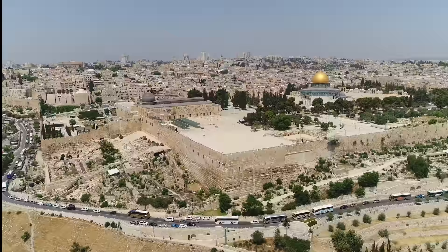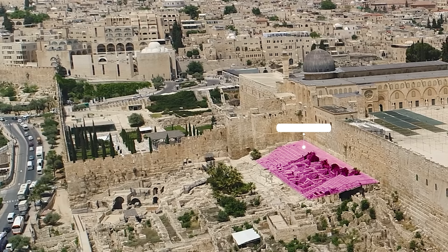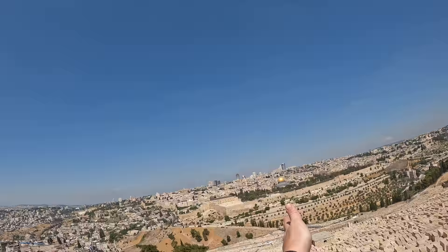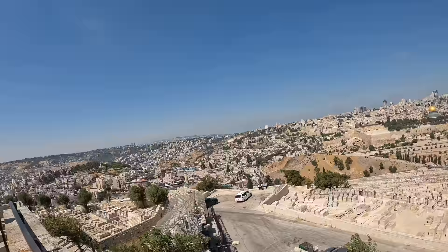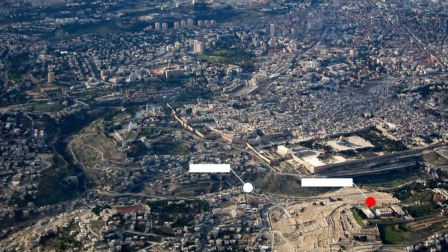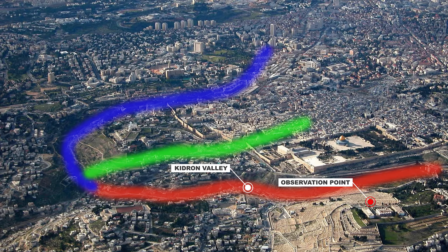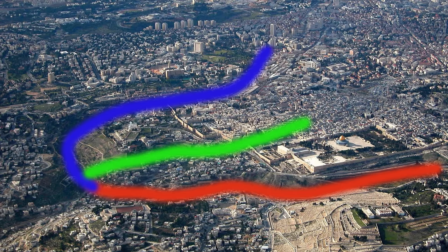They not only found the gates but also the stairs that would lead people towards the temple. Can you imagine? These may be the very steps that Jesus took when he went up to the temple. Now let's talk a little about the geography. I'm pointing to the Kidron Valley — one of three main valleys around the ancient city of Jerusalem. Apart from the Kidron Valley you also have the Hinnom Valley and the Tyropoean Valley.